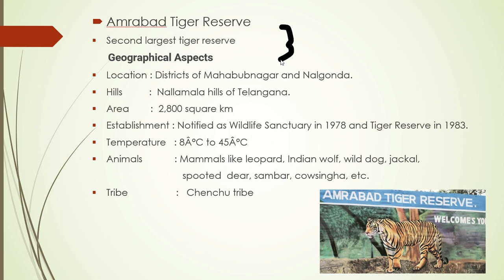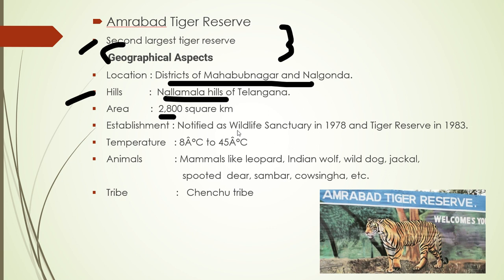The third important tiger reserve is Amrabad Tiger Reserve. It is the second largest tiger reserve, located in the districts of Mahabubnagar and Nalgonda. From a geographical point of view, it has the Nallamalla Hills of Telangana, and its area is 2,800 square kilometers. It was notified as a wildlife sanctuary in 1978 and as a tiger reserve in 1983. Along with tigers, mammals like leopards, Indian wolf, and various others can be found here. A direct question for exams: which tribe exists here? The answer is the Chenchu tribe.